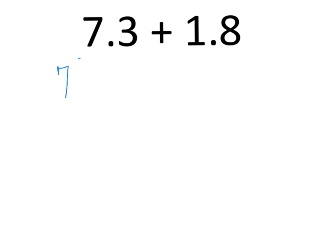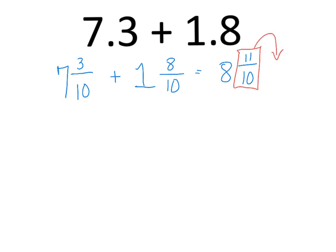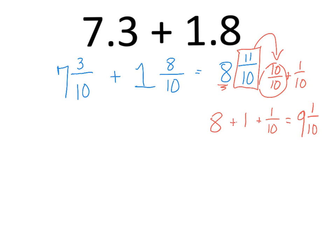Next one: 7 and 3 tenths plus 1 and 8 tenths. It's great because it's already in the tenths place. So how will this look? 7 and 3 tenths plus 1 and 8 tenths gives you 8 and 11 tenths. But now we see that we have an improper fraction, so we must pull out the wholes. We have 1 whole plus 1 tenth, which gives us — don't forget the 8 — so 8 plus this whole plus 1 tenth, which gives us 9 and 1 tenth. That would be converted into a decimal: 9 wholes and 1 tenth.